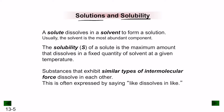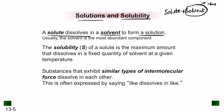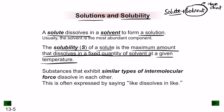A solution is a combination of solute plus solvent. A solute gets dissolved in a solvent to form a solution. The solvent is the most abundant component — the bigger of the two — and the solute is the smaller quantity. Solubility of a solute is the maximum amount that can be dissolved in a fixed quantity of solvent at a given temperature.